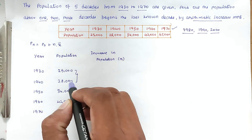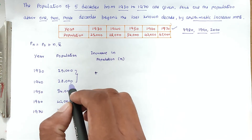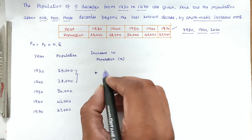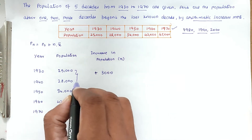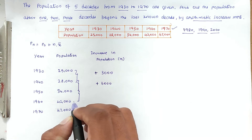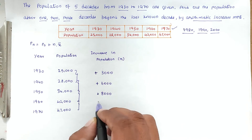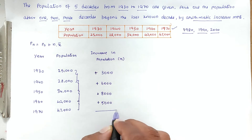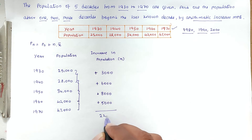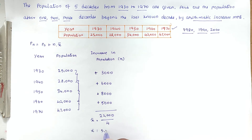We calculate the increase in population for each decade. Whenever population increases, we take a positive value; if it decreases, we take a negative value. The increases are: +3,000; +6,000; +8,000; and +5,000. Adding all these gives a total of 22,000. Dividing by 4 decades: x̄ = 22,000 ÷ 4 = 5,500.